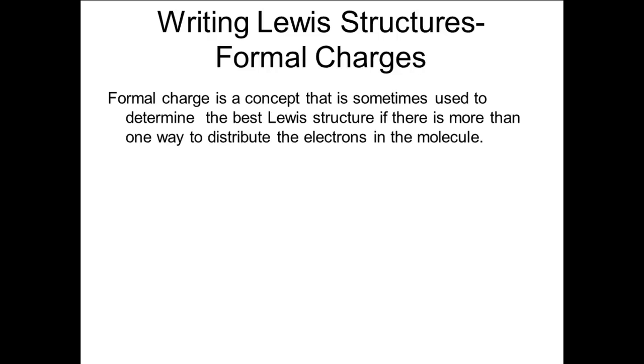Writing Lewis structures — formal charges. What happens when you have more than one possible way to arrange the electrons for a Lewis structure? This is often the case when multiple bonding is present. How do we decide what arrangement of the electrons is most likely to be true? In a situation like this, the formal charge can be helpful in determining which structure is the most likely.